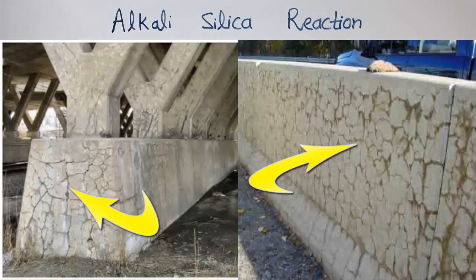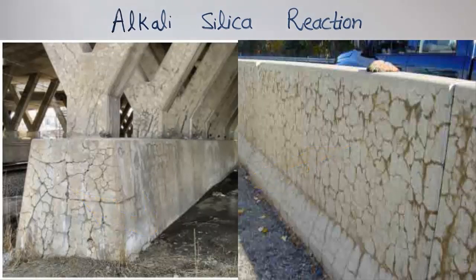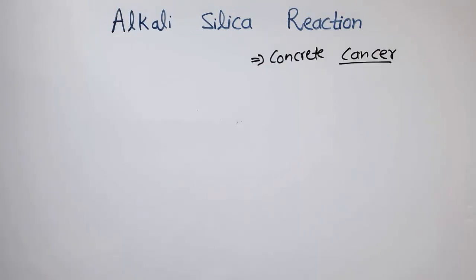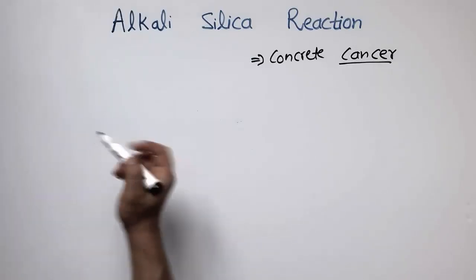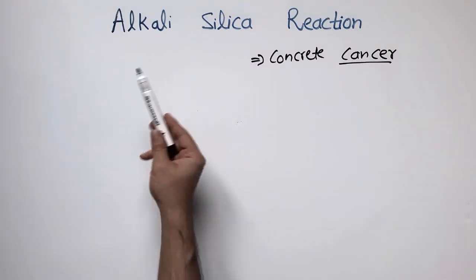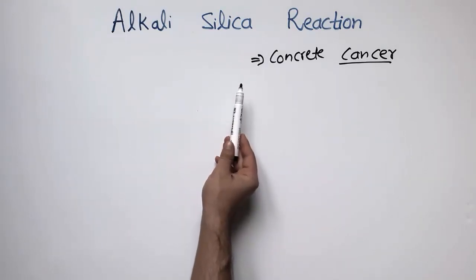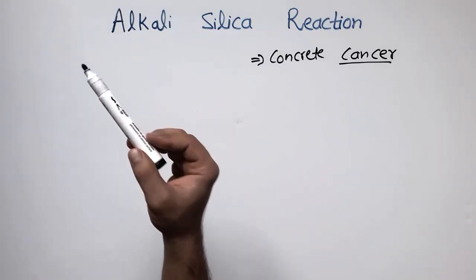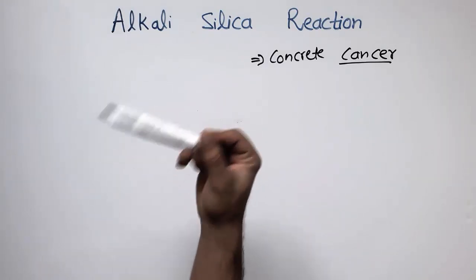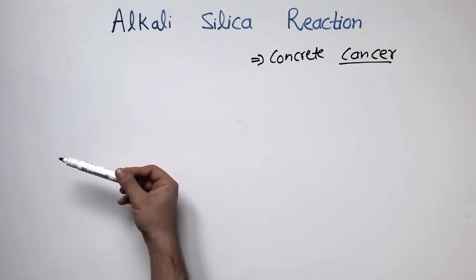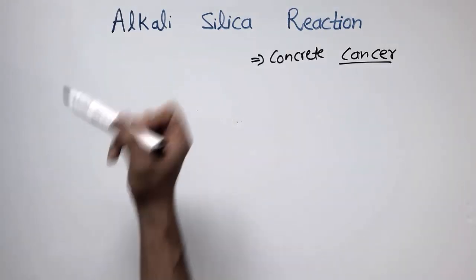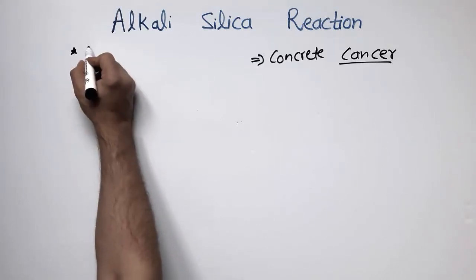The reaction keeps increasing over time, and with the penetration of chloride or other aggressive components into the concrete, it kills the life of the concrete — that's why it is called concrete cancer. Now we will discuss how this alkali silica reaction occurs, what the important components are, what effects it creates, and how to avoid it.